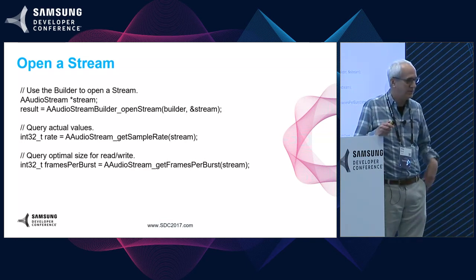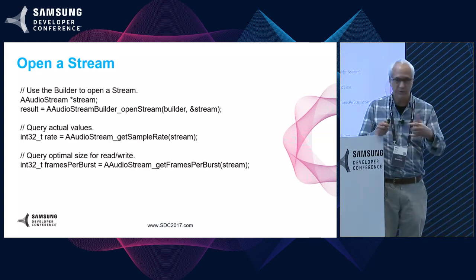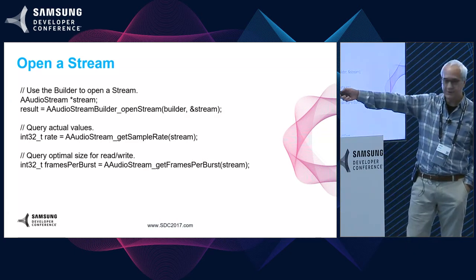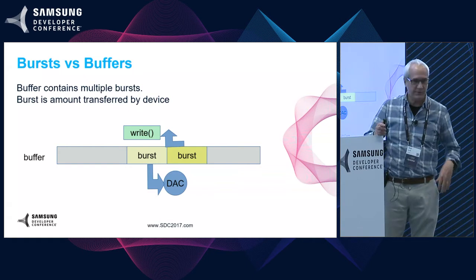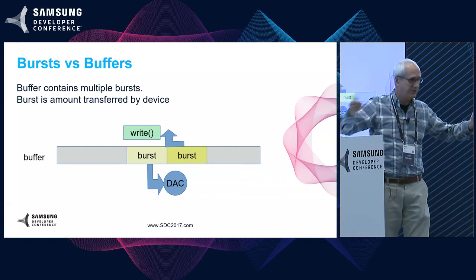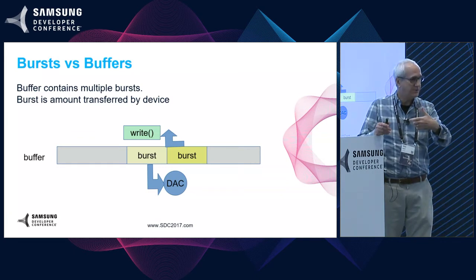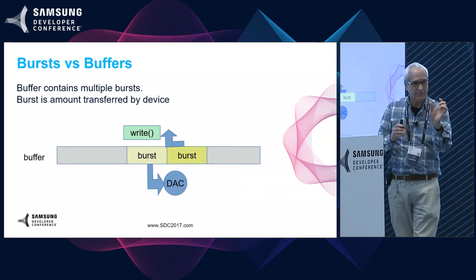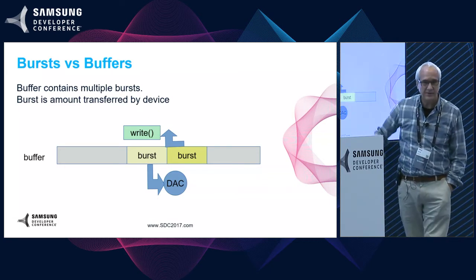You don't have to necessarily specify the sample rate — just leave it to the default and A-Audio will pick the best sample rate for that device. Once you've got your stream, you can query to see what you've got. There's also a burst query — frames per burst. People usually talk in terms of buffers, but that word is overused. Here, a buffer is the whole big thing containing audio you're writing into, and a burst is just one little chunk that the hardware, mixer, DSP, or DMA reads. If you match that burst size, you can optimize performance by writing just the amount needed. There are two bursts in this buffer, which determines your latency.